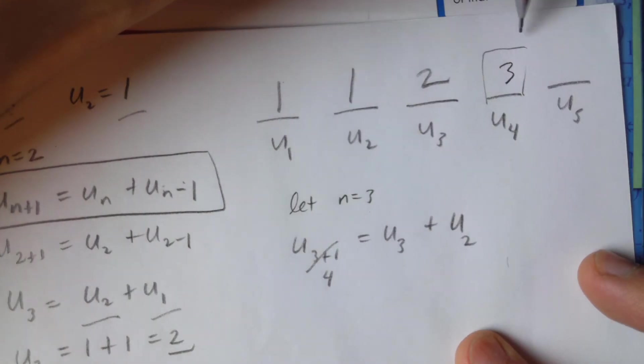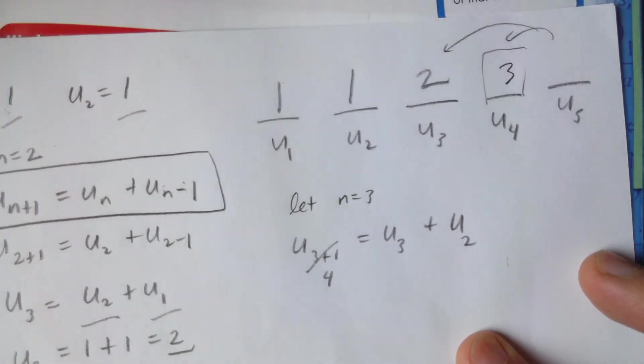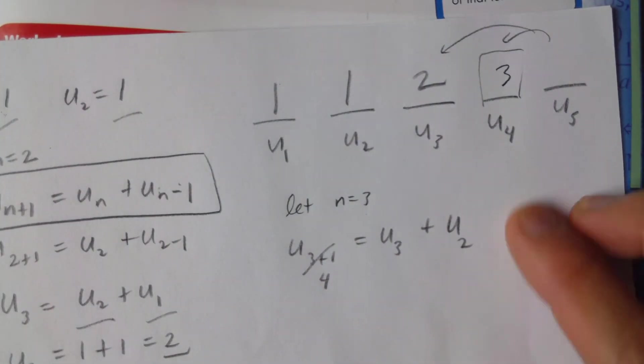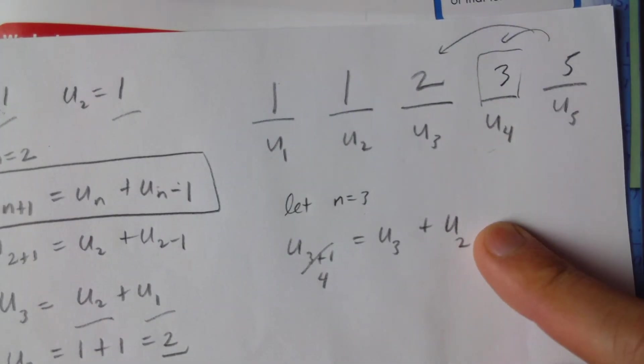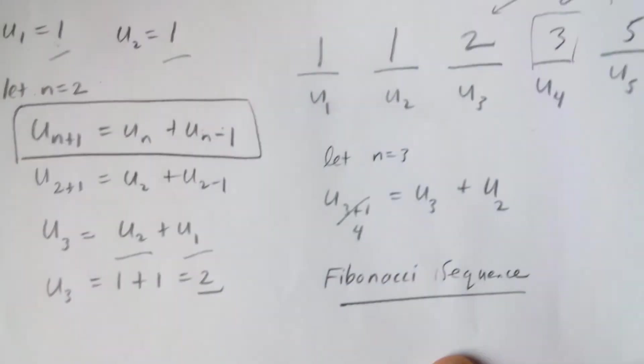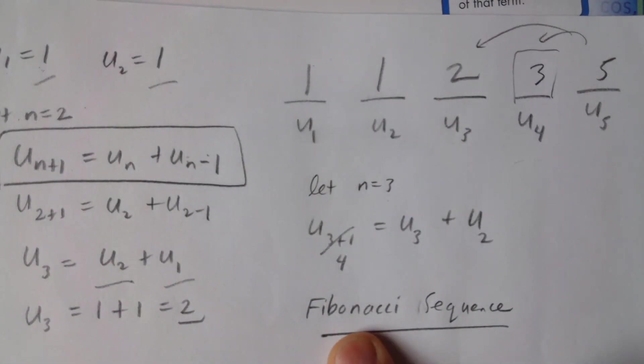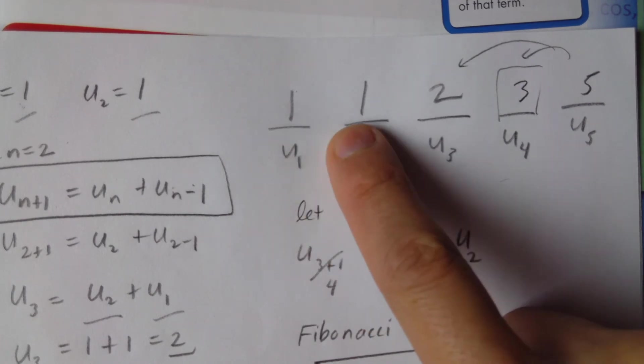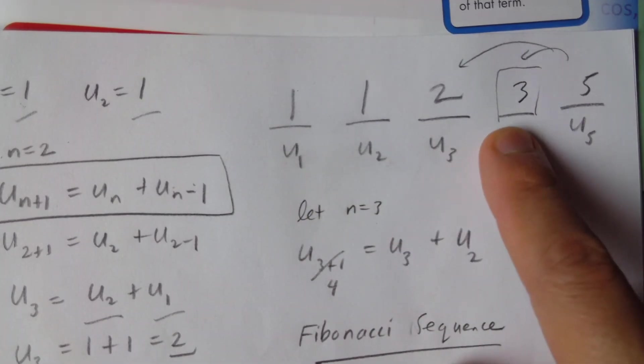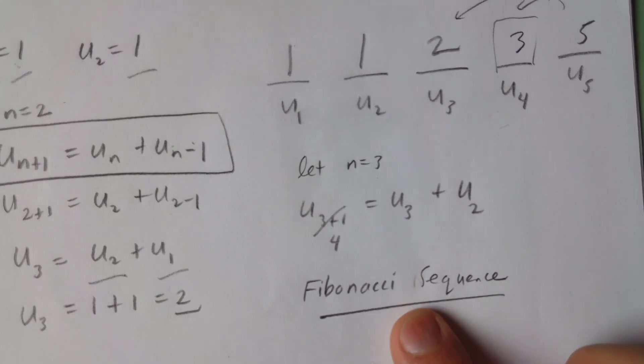And then if you're adding the previous two terms for the u5 term, we can see the pattern. 3 plus 2 is 5, and this pattern adds up quickly. So look up the phrase Fibonacci sequence, and you'll see that when you add the first two numbers, 1 plus 1 is 2, 1 plus 2 is 3, 2 plus 3 is 5, 3 plus 5 would be 8, etc. This is an interesting pattern.